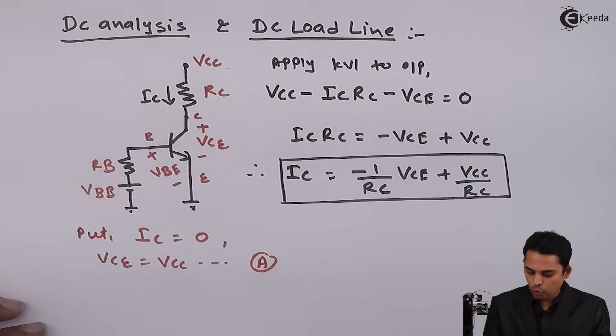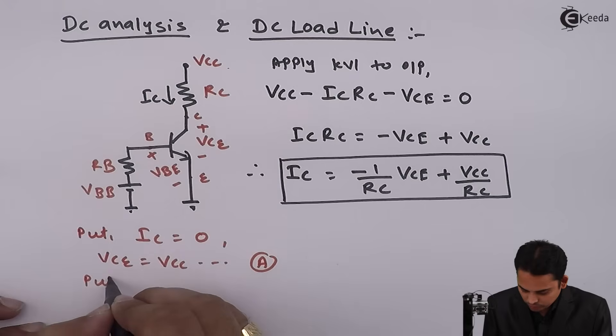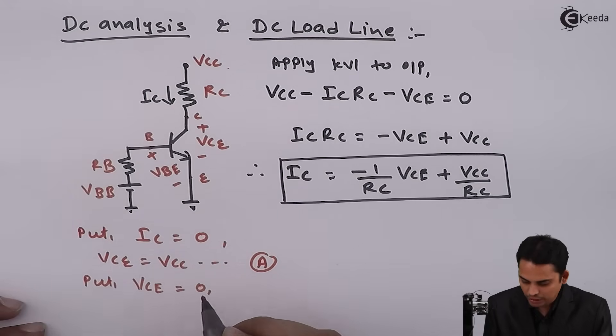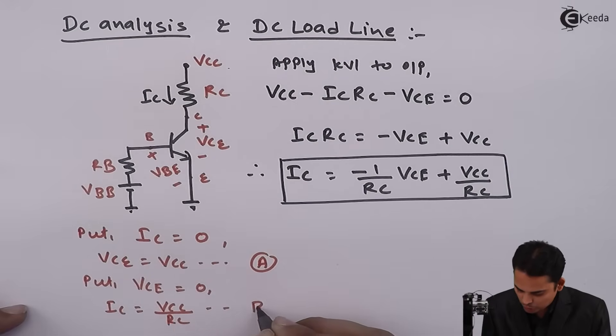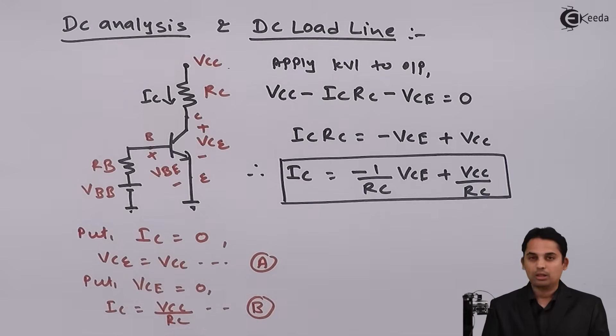If we put VCE equal to 0, then we will get IC equal to VCC by RC, that is point B. So we have got point A and point B. So we can easily draw a DC loadline in output characteristics.